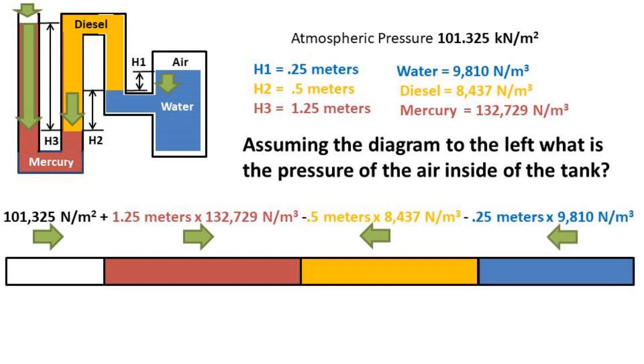Now finally, we hit the water. There is more water on the side we are solving for. This means that the water is exerting a force outwards towards the open end. We must subtract the specific weight of the water times the height difference to get the final pressure of the air.